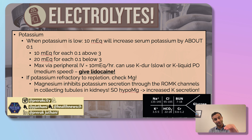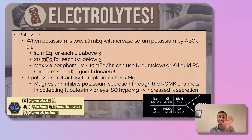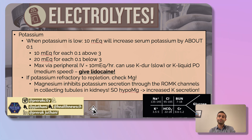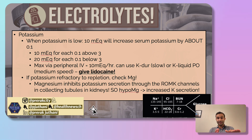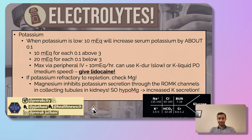If someone has low potassium, also check their magnesium. One of the biggest causes of hypokalemia is hypomagnesemia. Magnesium inhibits potassium secretion through the ROMK channels in the kidney. When magnesium is low, that inhibition is decreased, causing increased potassium secretion — and that drives potassium levels down.